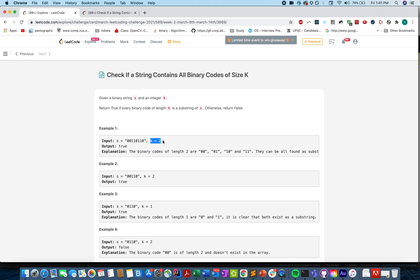You need to generate all the binary codes of length k that would be 00, 01, 10, 11 and for each of this binary code we need to check whether it is part of the input string or not. If it is part of the input string we continue the process till the time we don't exhaust this list. Otherwise if it is not, we abort the process and return false from there and then itself.